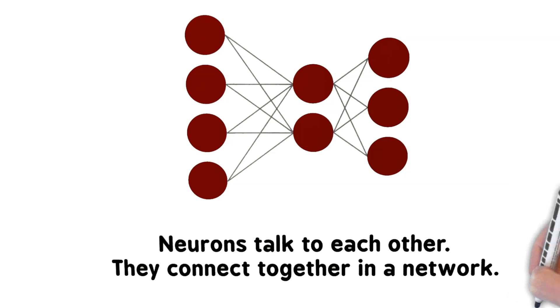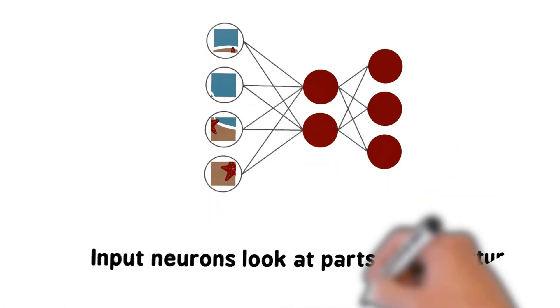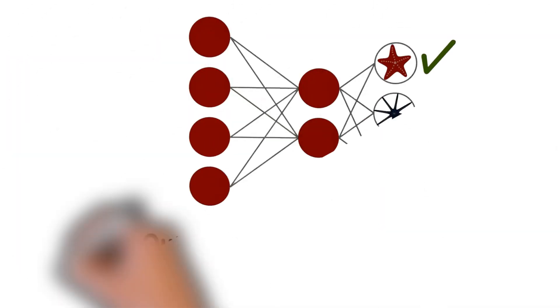Input neurons look at parts of the picture. Output neurons have answers about the picture.